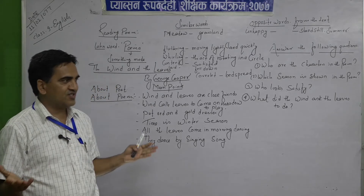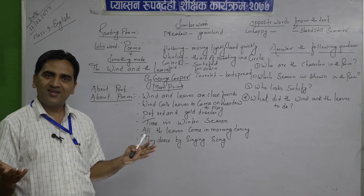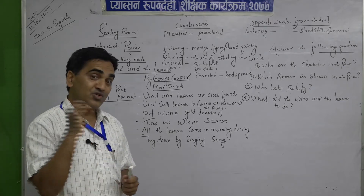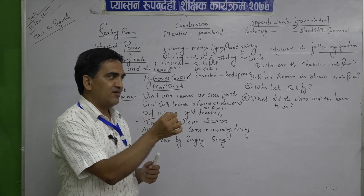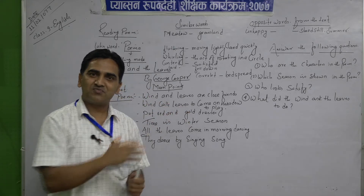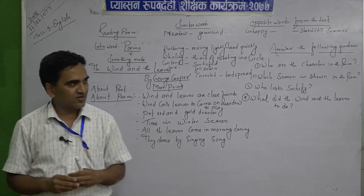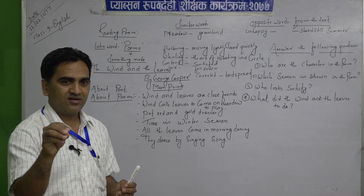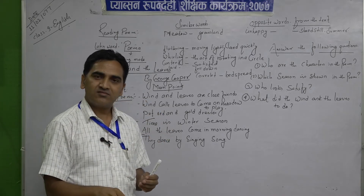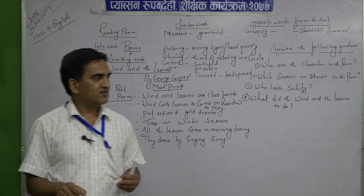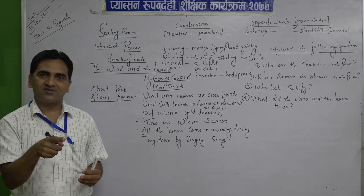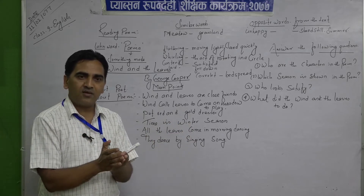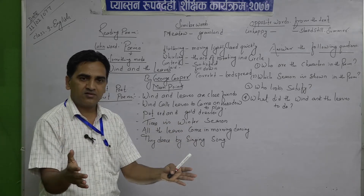It is said that if we want to get real happiness, we should go to nature — back to nature. British poet William Wordsworth also focused on nature. Nature is God; we should worship nature. The natural picture we see in the poem includes land, leaves, and wind.